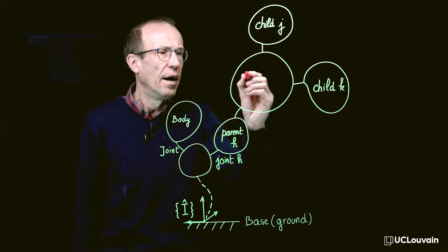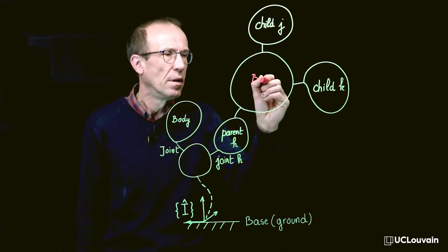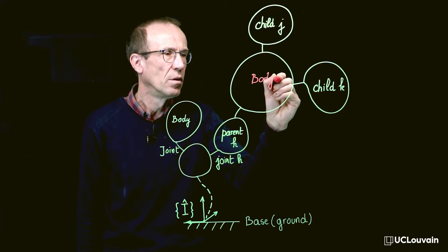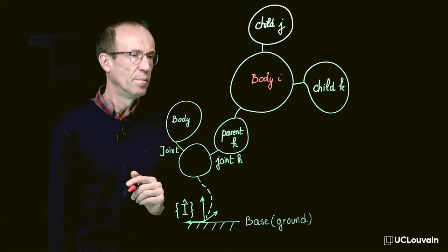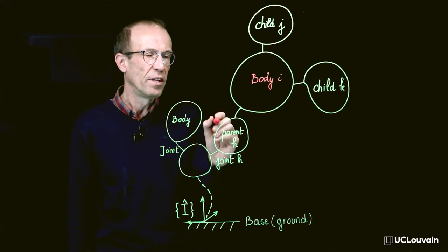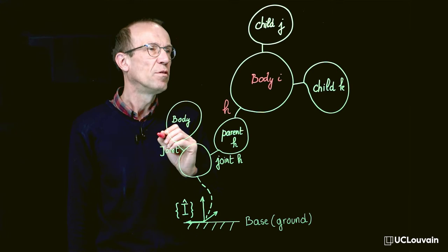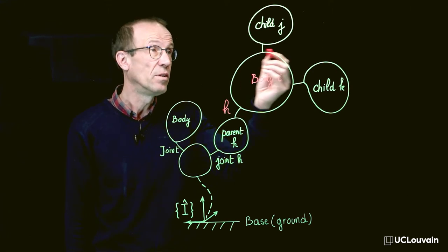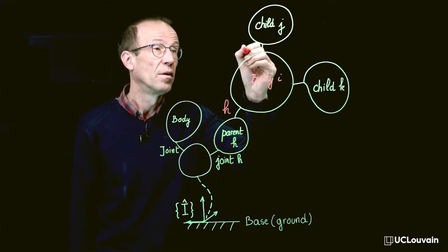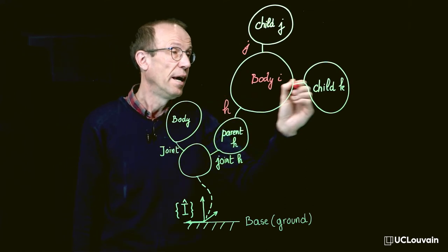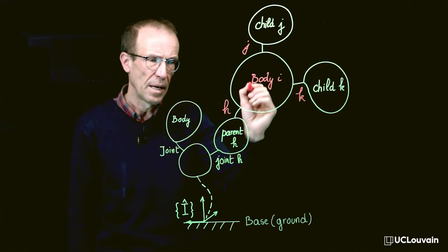Body I is connected to other bodies in the system and especially to its parent H via joint H, and to children bodies, in this case body J via joint J and body K via joint K.